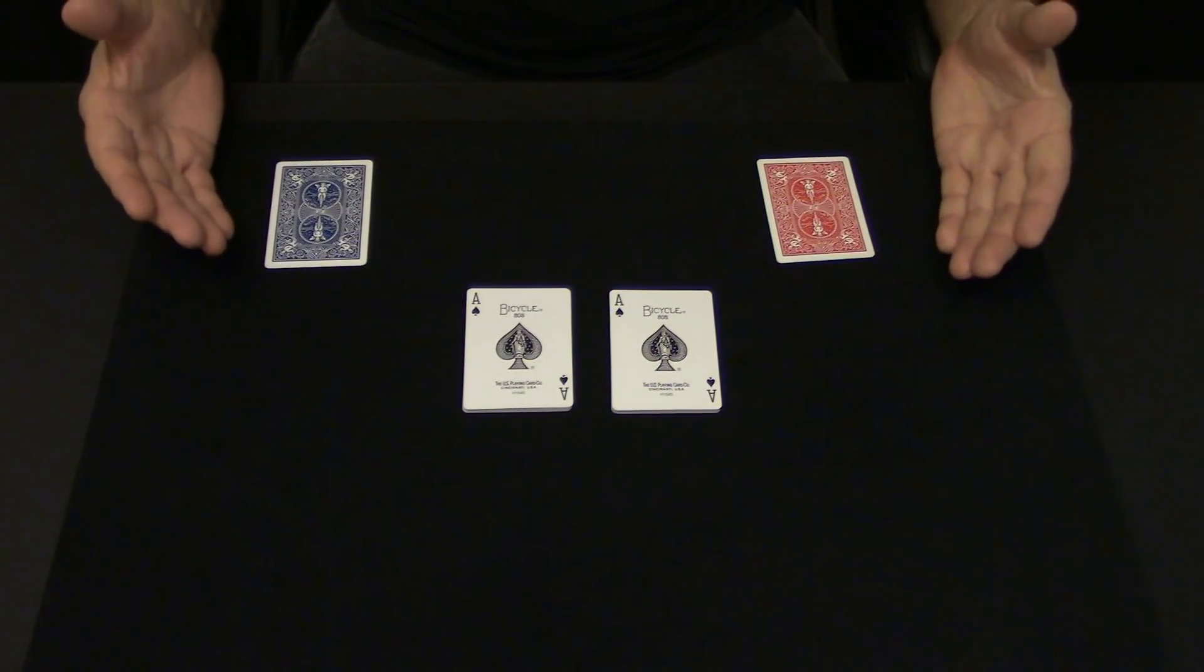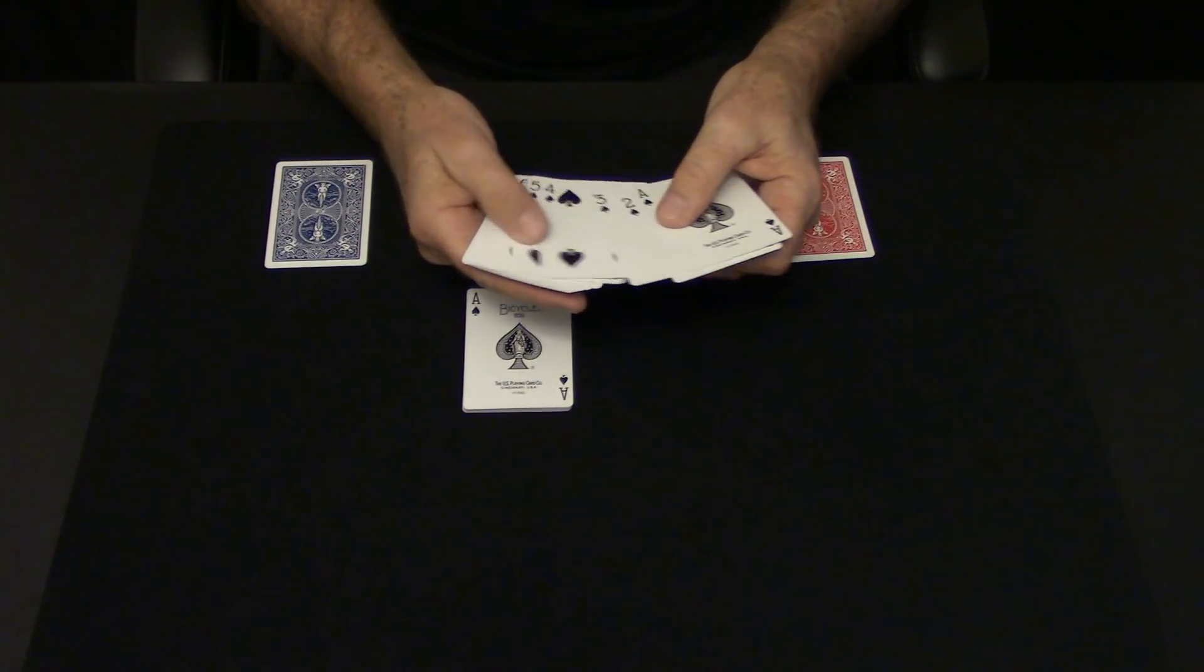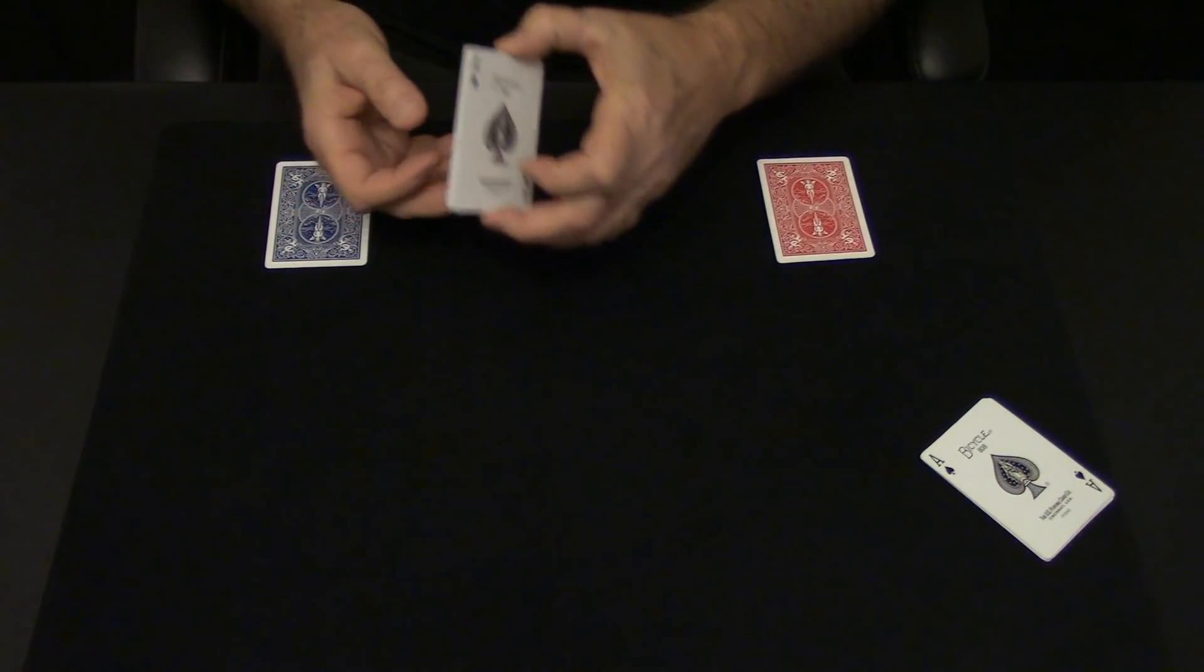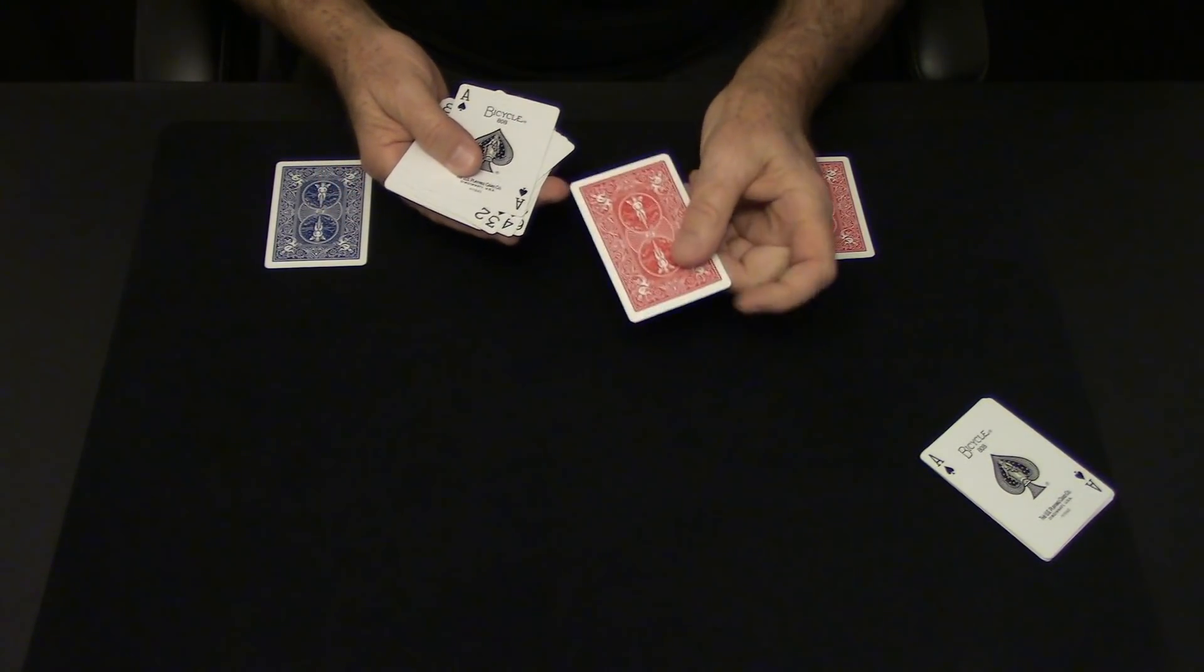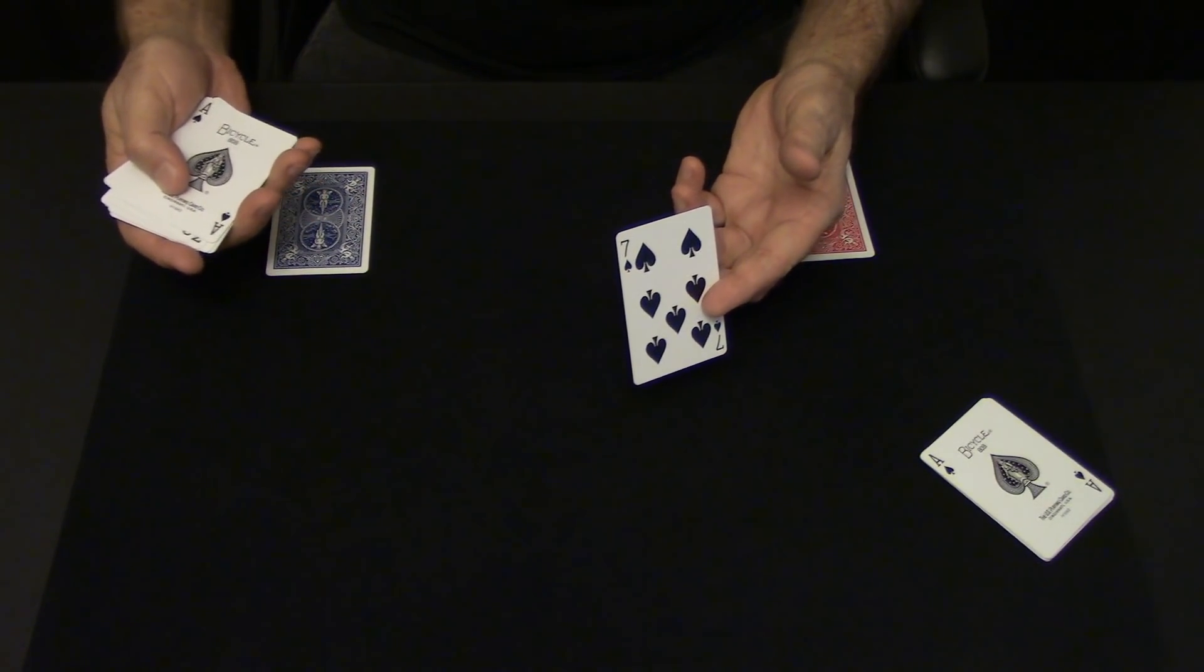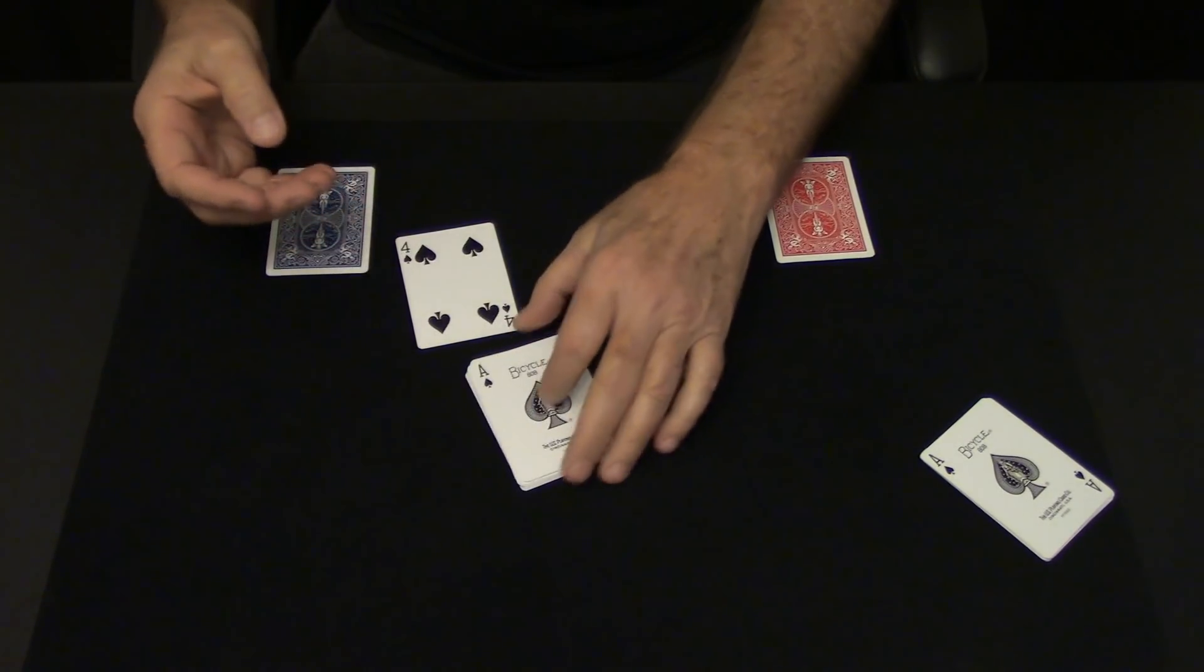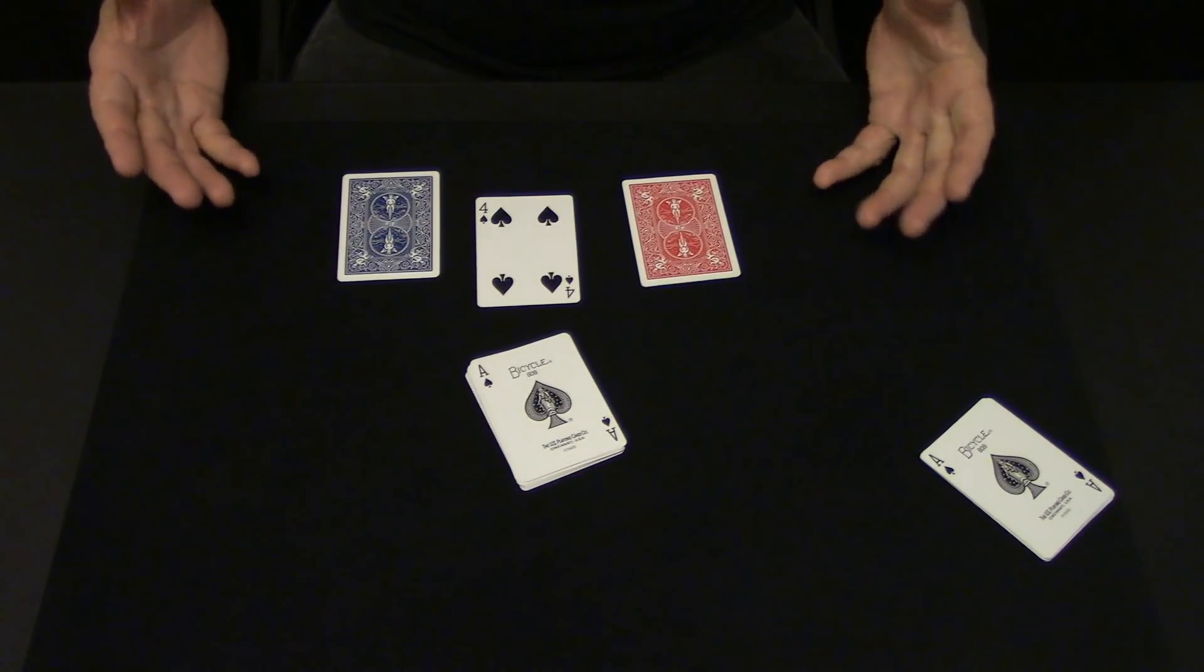So you will need either a can of Testers Dole Coat number 1260 or a can of Krylon Matte Finish number 1311. I've used both and they both work. I'll explain in a minute. The first thing is to gimmick the three cards. Place one of the sets off to the side. This set will be legit. Ace through King with all red backs. The other set will be gimmicked. Remove the red backed seven of spades. Get rid of it. We don't need it because we're replacing it with the blue backed seven of spades.